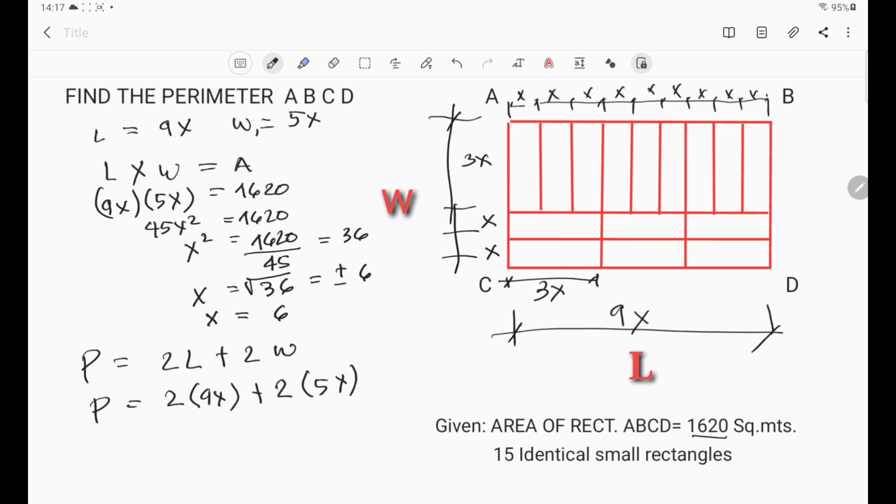So simplifying, it is equal to 2 times 9 times x which is 6, plus 2 times 5 times 6. So P is equal to 108 plus 60. So the perimeter is 168 meters.